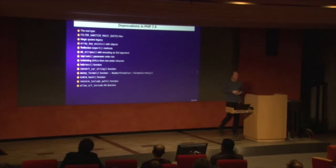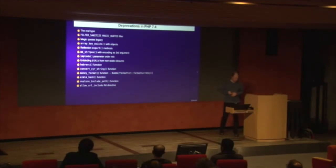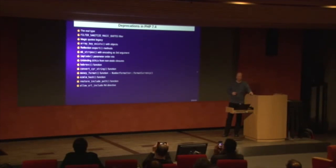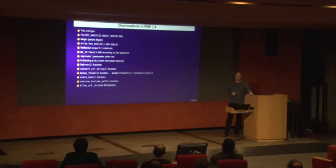This is all being deprecated in 7.4. I will not go through this whole list — you can do this in your own time. The slides I'll make available later. Lots of these things you probably have never heard of, except for one which really caught me out: array_key_exists with objects. Before PHP 7.4, you could actually call array_key_exists to check whether an object had specific properties. Apparently one of my libraries used that, so don't do that anymore — you can use isset instead.